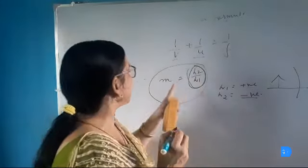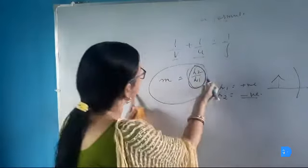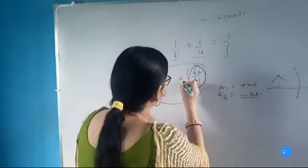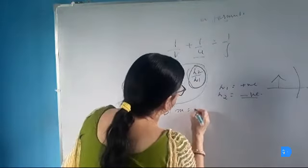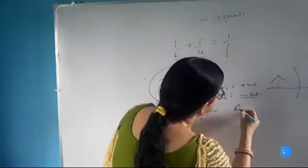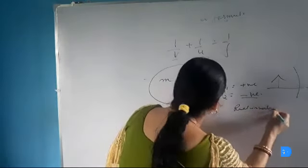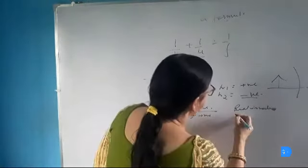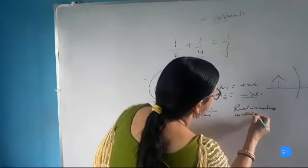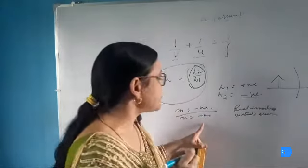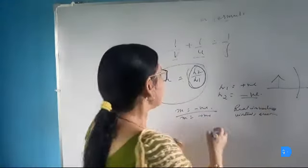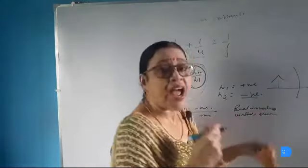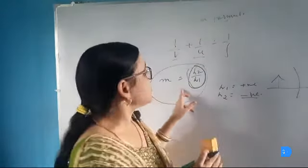If the height of the image is positive, then magnification will also be positive because H1 is always positive. But when the height of the image is negative, then the sign of magnification will also be negative. Thus if magnification has a negative sign, we can understand that the image is real and inverted. But if the magnification has a positive sign, then the image is virtual and erect and formed behind the mirror.